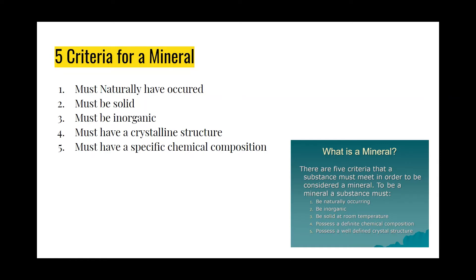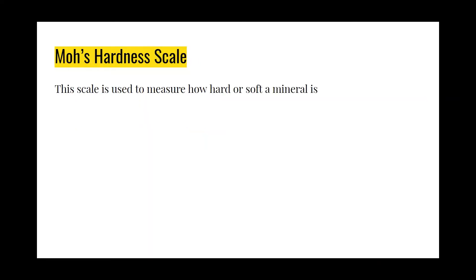The five criteria for a mineral are: it must have naturally occurred, it must be solid, it must be inorganic, it must have a crystalline structure, and it must have a specific chemical composition. The picture also explains these five criteria for a mineral.